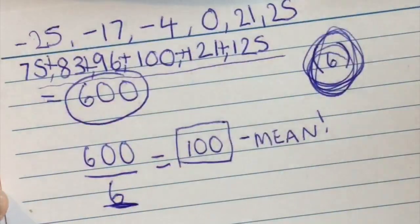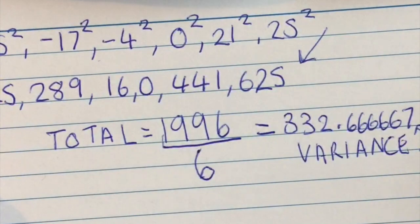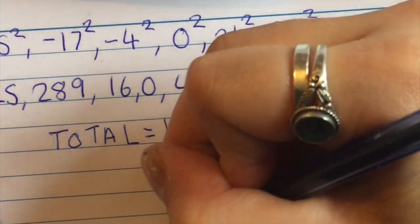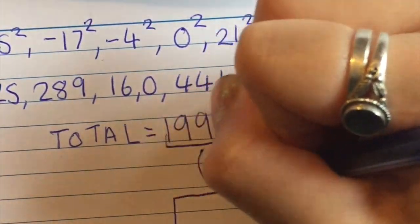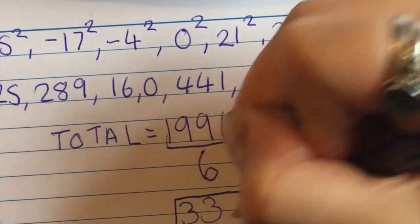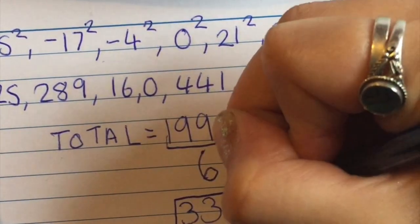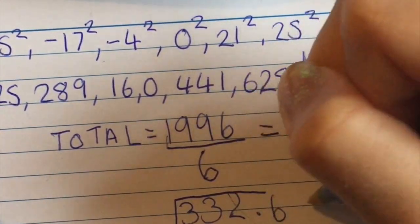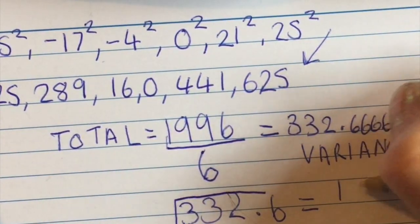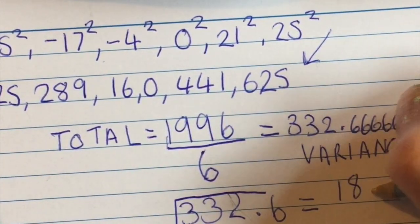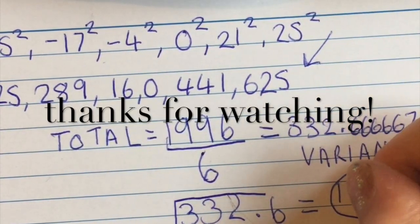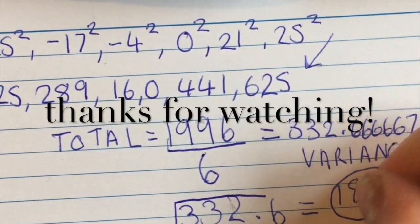If you're already given the variance, it's a bonus — all you need to do is find the square root. These are all the steps you need from the beginning. The square root of 332.6 is 18.2, and that's your standard deviation.